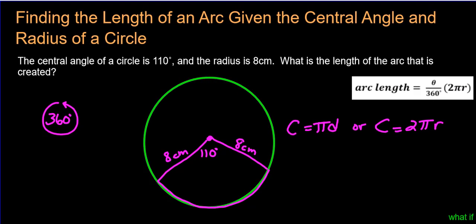So I'm going to just use that formula right now, 110 degrees over 360. That's going to give us our percent, and then we're going to multiply that by 2 times pi times the radius being 8 here.